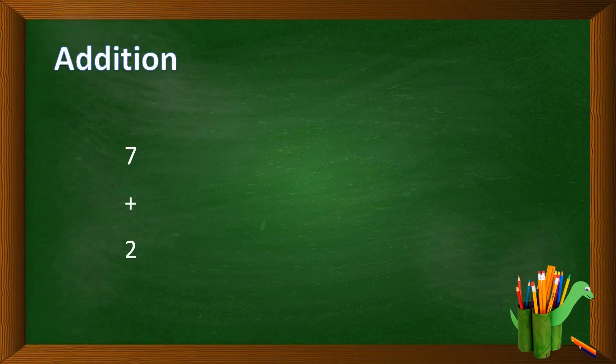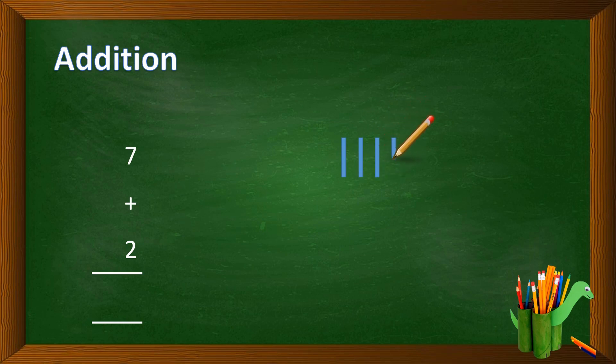So now we add 7 and 2. Kids, draw 7 lines, let's start: 1, 2, 3, 4, 5, 6, 7. Now draw 2 lines: 1 and 2. Now we count all lines together: 1, 2, 3, 4, 5, 6, 7, 8, 9.